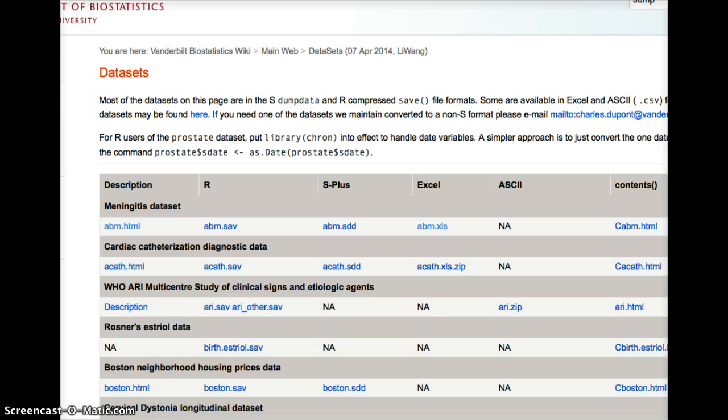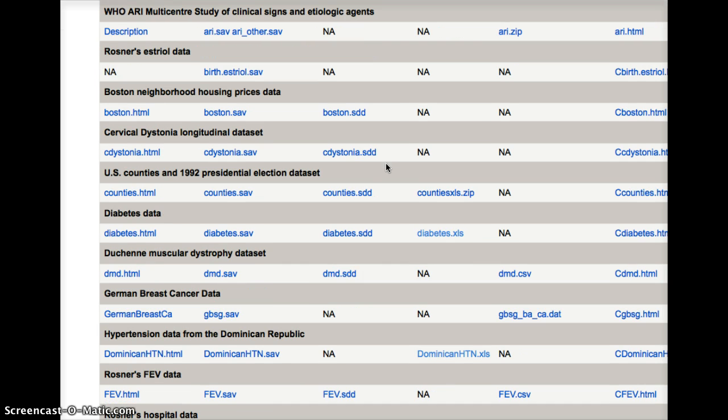The datasets are available here, and they are in many formats. The easiest one for us to use will be the Excel format. I'm going to choose one of the datasets in the Excel format. I think I will try the diabetes data. Please download diabetes.xls, and we'll do some analysis on that dataset.